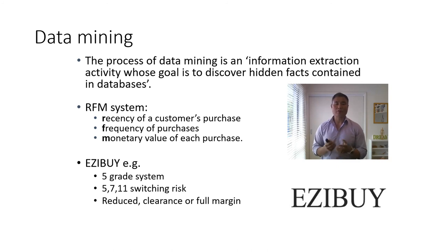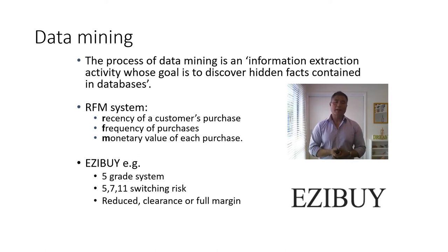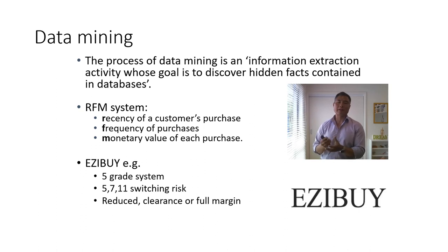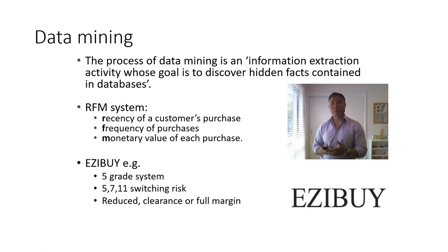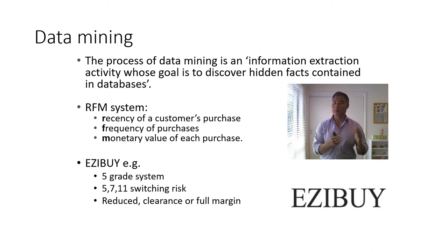In terms of data mining, once you have data you can do some really powerful things. The example here is Easy Buy, an online and physical retailer selling fashion and household goods. They use an RFM system — recency, frequency, and monetary value of each purchase — with a five-grade grouping system. One simple use is identifying when customers are most at risk of switching to another online retailer: sometimes at the five-month mark, sometimes the seventh, sometimes the eleventh.